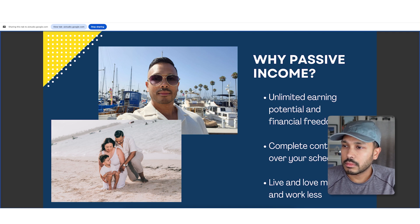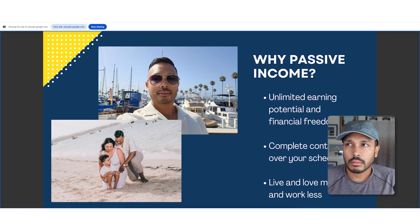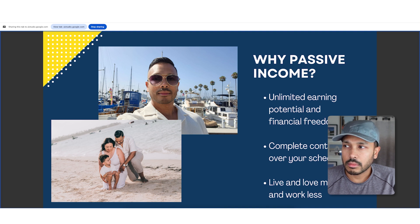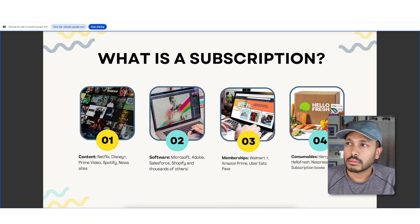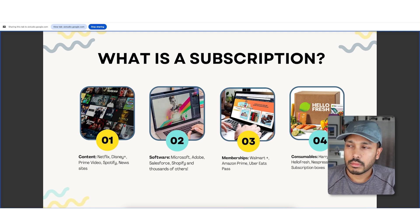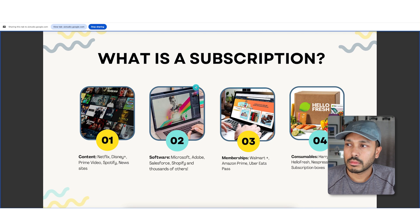Moving to the next slide, I ask if it sets up the presentation well. Gemini describes the slide titled 'Why Passive Income,' noting three bullet points about its benefits and two images — a selfie and a family picture at a beach. It suggests adding a bullet point about creating multiple streams of passive income, which I agree is a good idea. I then skip a few slides to one titled 'What is a Subscription?' Gemini describes how it categorizes subscriptions into content, software, memberships, and consumables with examples for each, and confirms the slide is very clear and well-organized.